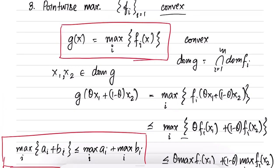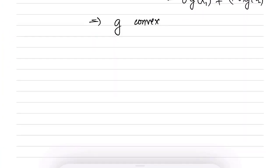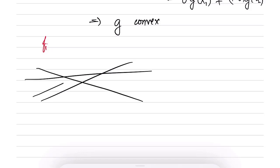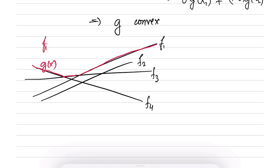Because g is the pointwise maximum, it may not be differentiable. Let's take a simple example: suppose each of the f_i's are lines — several lines drawn like this, f1, f2, f3, f4, and so on. What is their pointwise maximum?